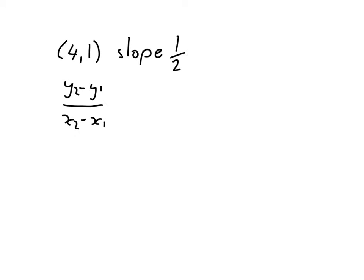Now if we have the slope, in this case equals a half, we know that any point on that line has a slope of a half. So we can do y minus 1 over x minus 4 equals a half.